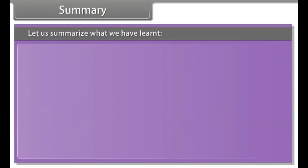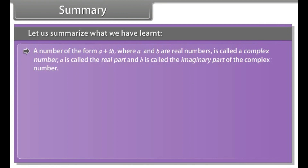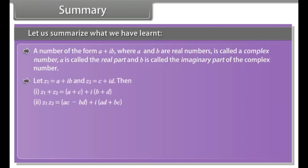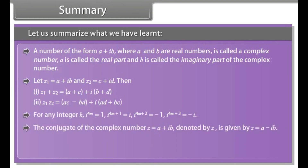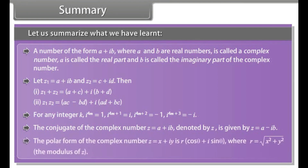Summary. A number of the form A plus B iota, where A and B are real numbers, is called a complex number — A is called the real part and B is called the imaginary part. For any integer k, the powers of iota follow a cyclic pattern. The conjugate of complex number z is denoted by z-bar. The polar form of a complex number is z equals R into (cos theta plus iota sin theta).